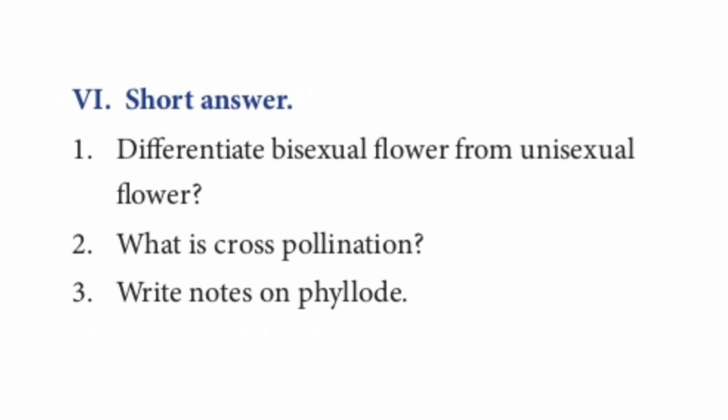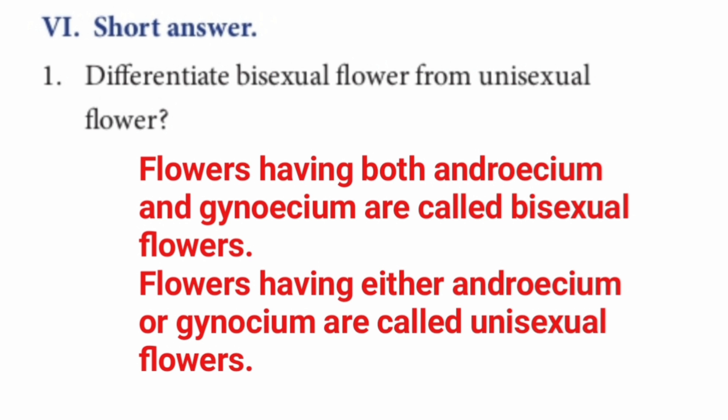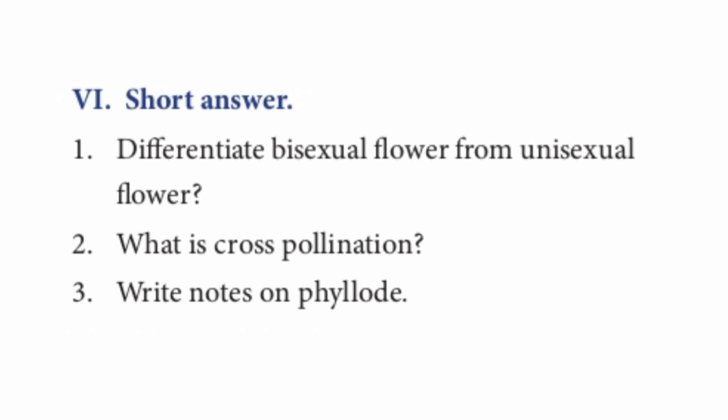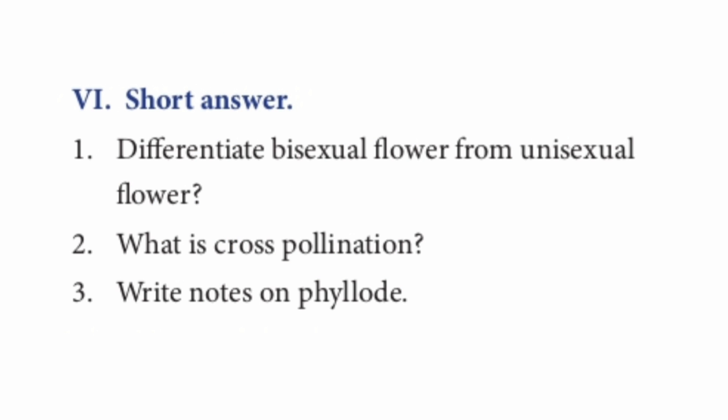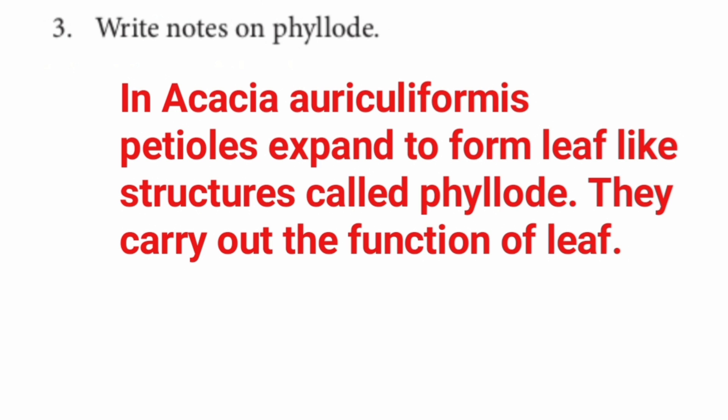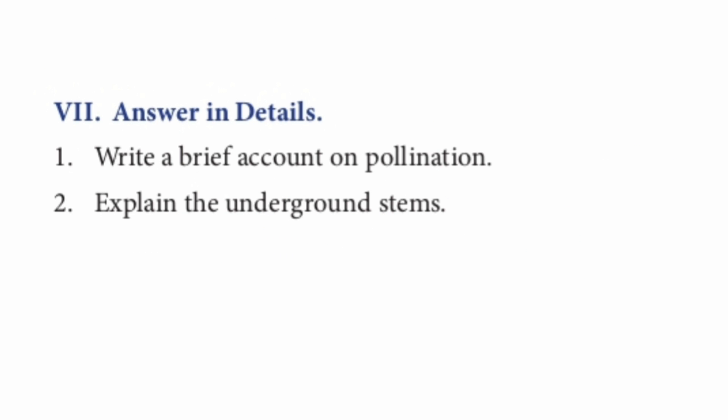Roman numeral VI: Answer briefly. Question 1: Differentiate bisexual flower from unisexual flower. Flowers having both androecium and gynoecium are called bisexual flowers. Flowers having either androecium or gynoecium are called unisexual flowers. Question 2: What is cross pollination? The transfer of pollen grains from the anther of one flower to the stigma of another flower of the same kind or different plant is called cross pollination. Question 3: Write notes on phyllode. In Acacia auriculiformis, petioles expand to form leaf-like structures called phyllode. They carry out the function of a leaf.